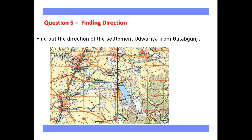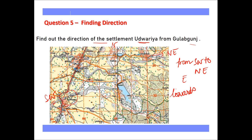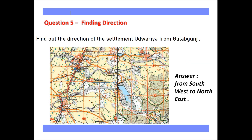Udhwariya is lying between north and east, so it is in the north-east quadrant, and Gulabkaj is lying in the south-west quadrant. Importantly, the question asks for the direction of Udhwariya from Gulabkaj. Since we go from Gulabkaj (south-west) to Udhwariya (north-east), we can say the direction is north-east. This is how we find the direction.